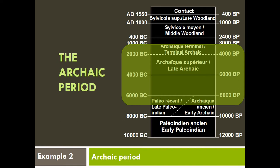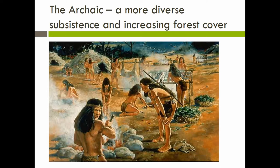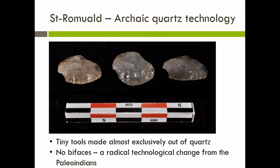Now we jump forward into the Archaic period — a very long period with a big change in lifestyle. Forest cover is coming in, people are becoming more sedentary, starting to fish and trap a lot of smaller mammals. I looked at a collection from a site near Quebec City. This is a crazy collection — every tool in this assemblage is about this big. There are no bifaces in this assemblage — none, zero. It's all made out of quartz, both vein quartz and crystal quartz. Archaeologists in eastern North America were stumped, at an impasse. We didn't know how to explain this big technological change, and we were always falling back on our typologies. Because the typologies had no place for this technology, we didn't know what to do with it.